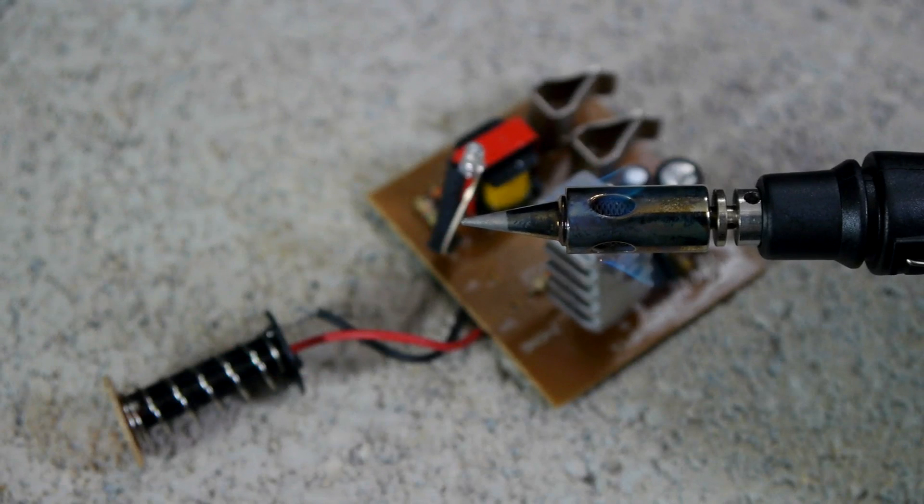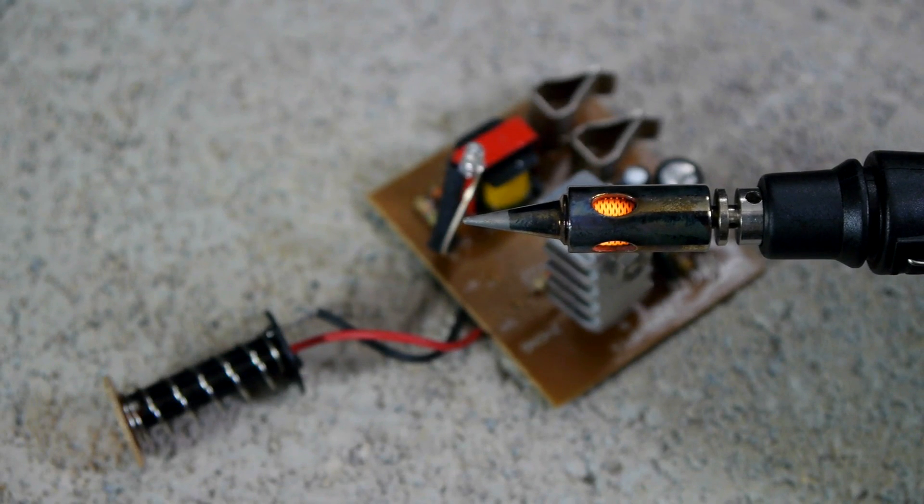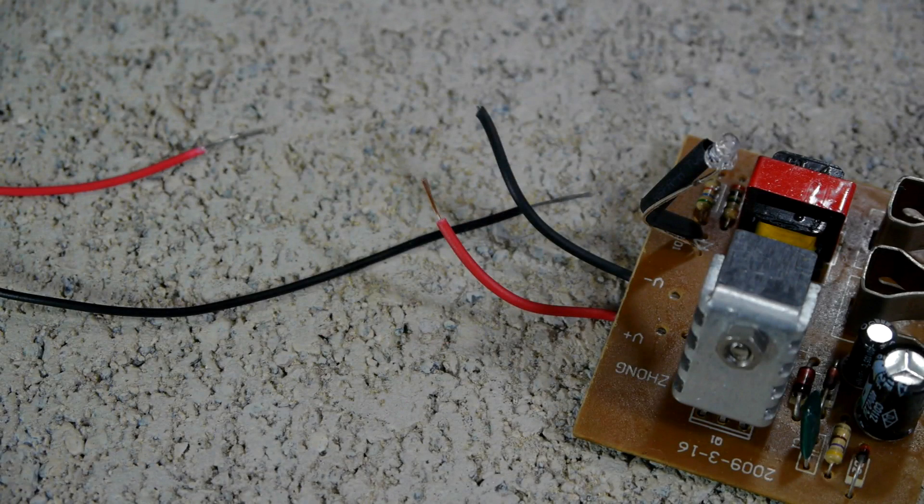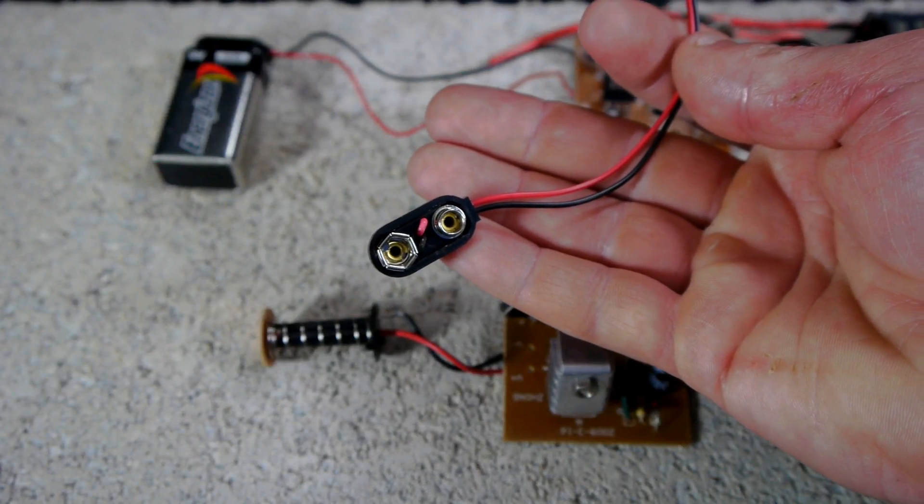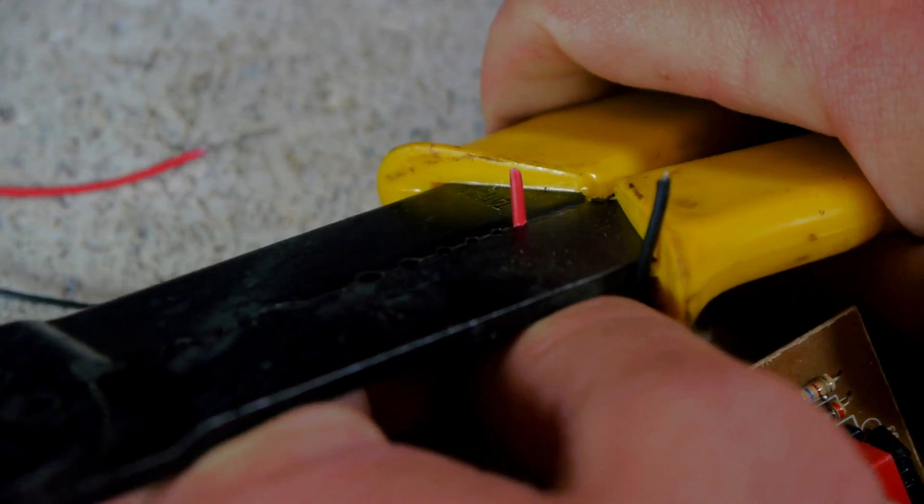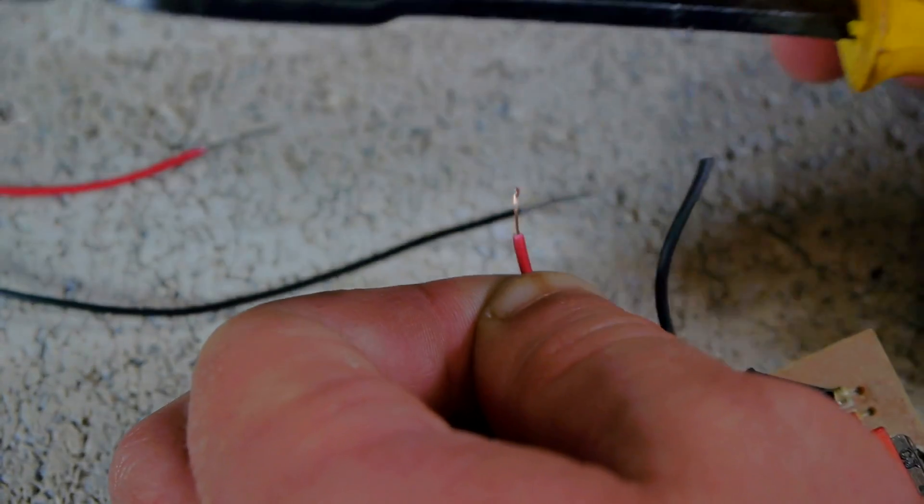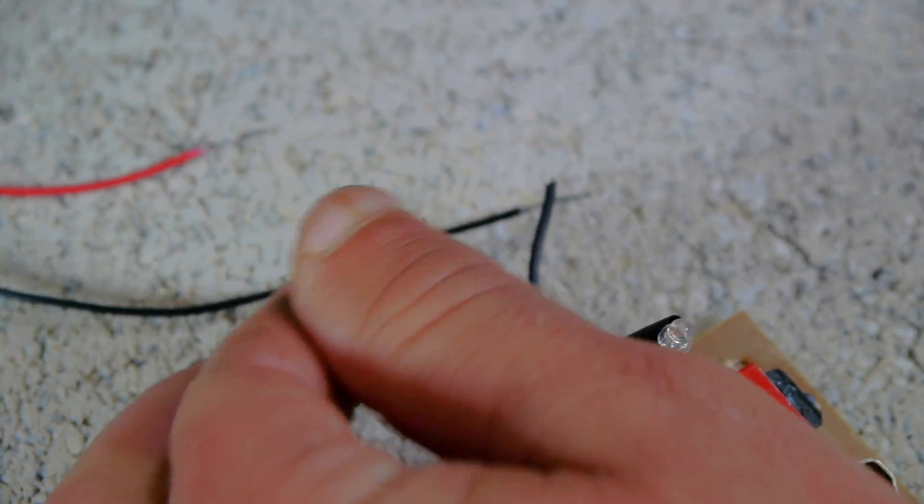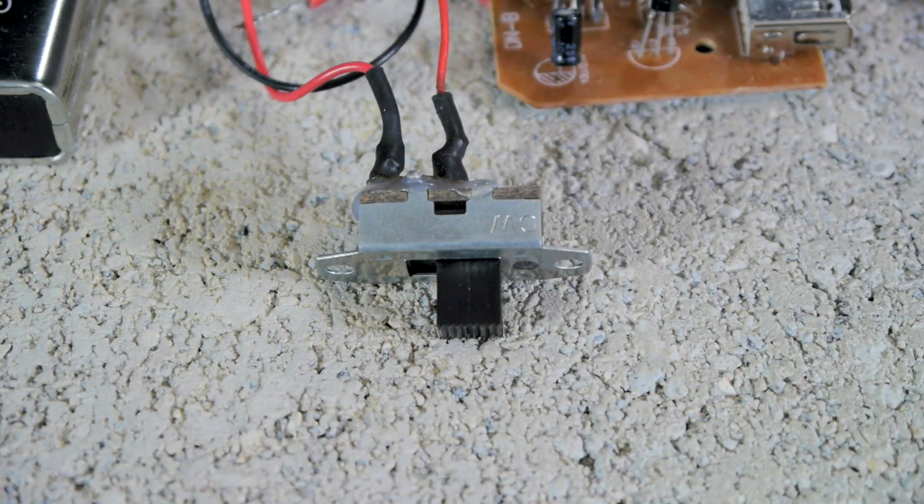We will be needing to use a soldering iron shortly, so now would be a good time to get one warmed up. On one side of our on-off switch we will be attaching the red wire that leads into our power converter. On the other side we will be attaching the red wire that comes off of a 9 volt battery harness. The red wire coming off of both of these devices must have a portion stripped off of the end so that we have room to solder onto the switch.